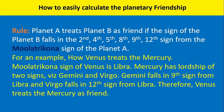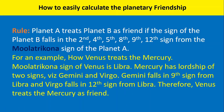For example, how Venus treats Mercury. The Mulatrikona sign of Venus is Libra. Mercury rules two signs: Gemini and Virgo. Gemini falls in the 9th sign from Libra, and Virgo falls in the 12th sign from Libra. Therefore, Venus treats Mercury as friend.